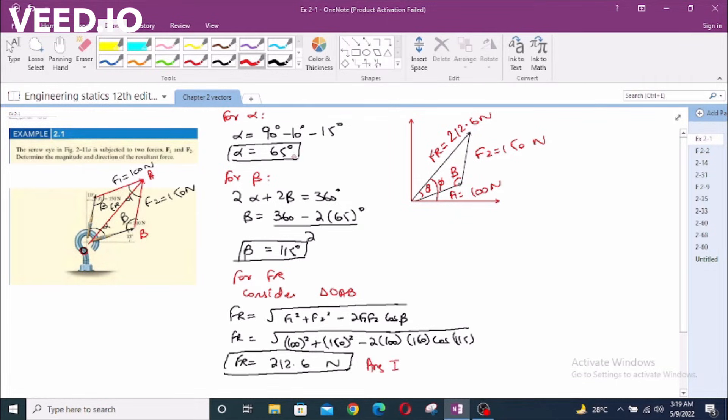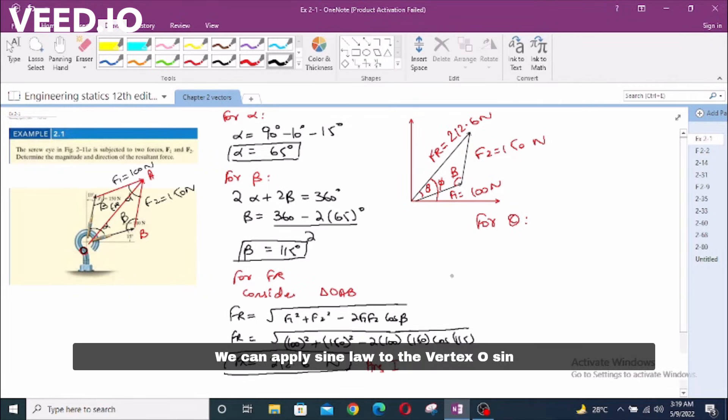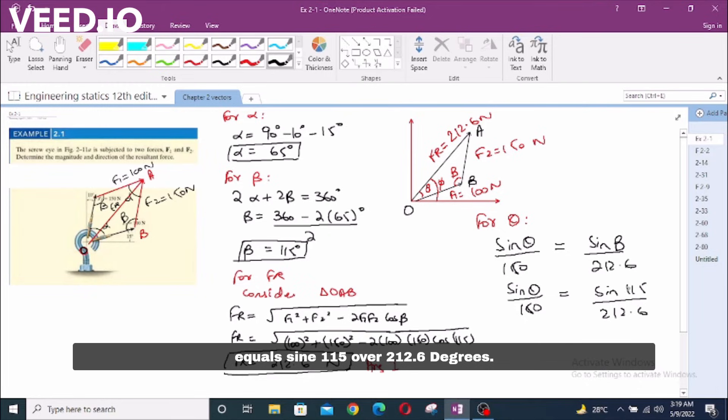For theta, we can apply sine law to the vertex O. Sin theta over 150 equals sin beta over 212.6 newtons. Sin theta over 150 equals sin 115 over 212.6. Theta will be 39.75 degrees.